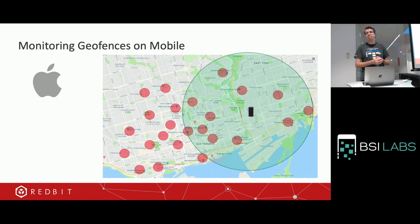With the iOS and Android APIs, you have longitude, latitude, and radius, so it would be difficult to create a square geofence — it's more complex, but you can do it.